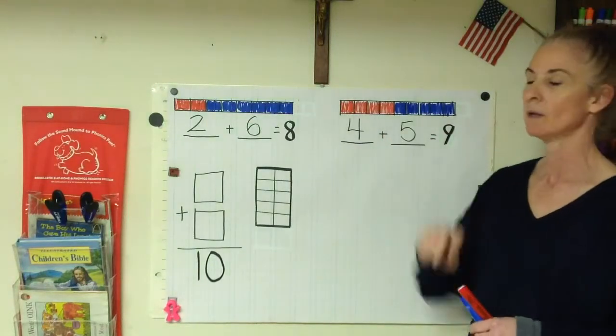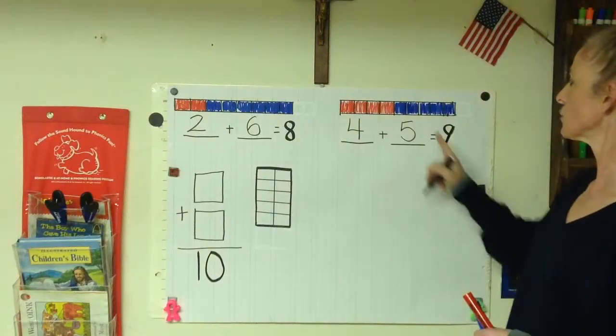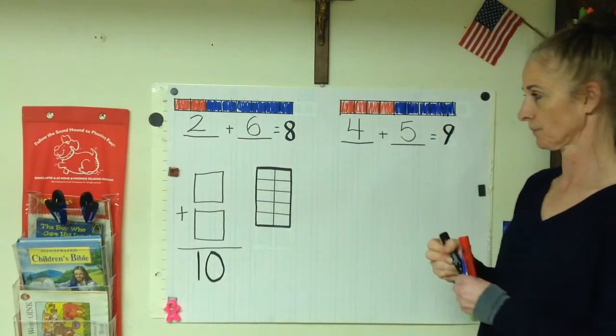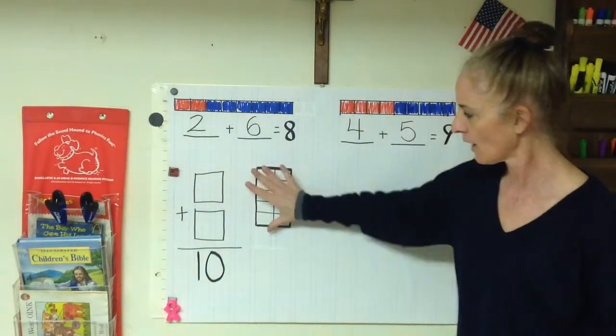So you're going to do two, making a sum of eight two different ways, and two, making a sum of nine, showing it two different ways. So your addends should not be the same for your two. Okay.